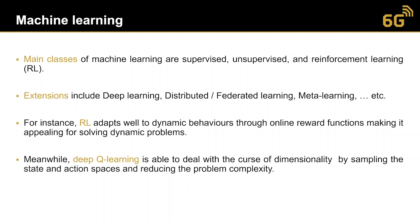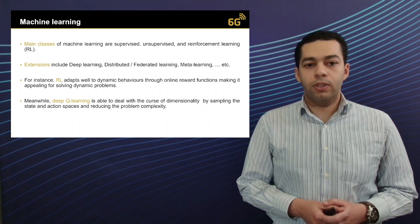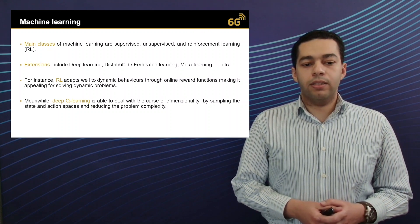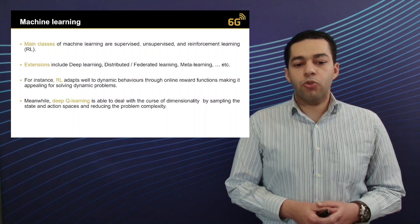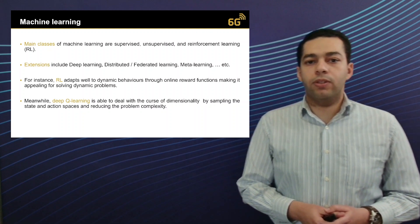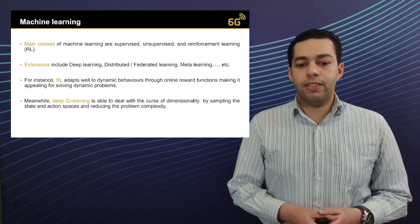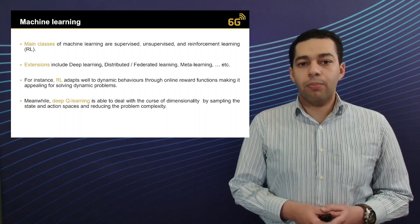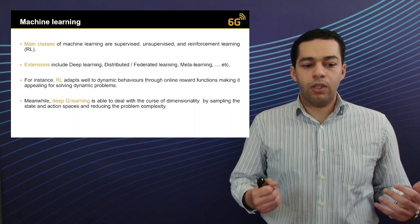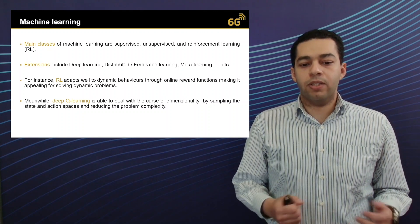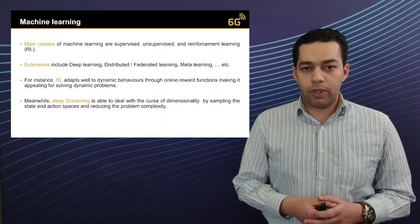Each of these algorithms is suitable for a specific type of problems. For instance, reinforcement learning is able to adapt to dynamic behavior and problems which are changing with time. Meanwhile, deep Q-learning is more suitable to deal with problems with high dimensionality, as it is able to sample the large action and state spaces and reduce the problem complexity.